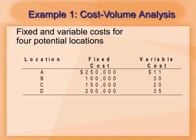Let's do example 1. We have 4 potential locations: A, B, C and D. This is the fixed cost and this is the variable cost. We will draw our cost volume analysis graph and we will find which location is the best to set up our business. Total cost is fixed cost plus variable cost time x. x is quantity.